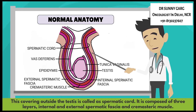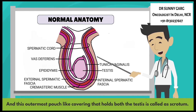The covering outside the testes is called the spermatic cord. It is composed of three layers: the internal spermatic fascia, external spermatic fascia, and cremasteric muscle. The outermost pouch-like covering that holds both testes is called the scrotum.